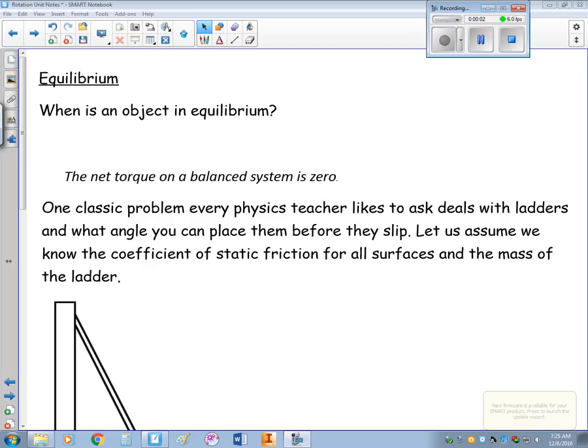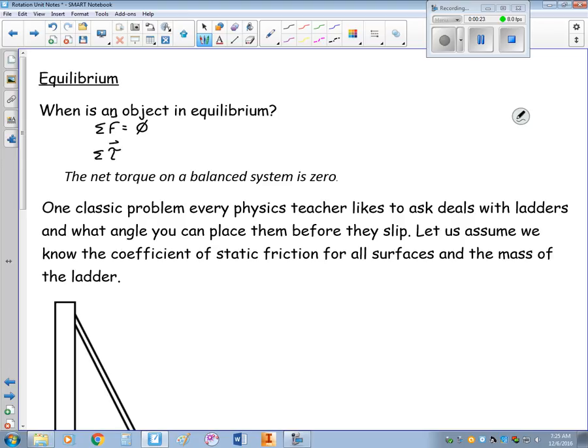Alright, this is video four for the rotation unit, and in this one we're going to talk about equilibrium. So in the past, an object was in equilibrium when the net force acting on the object was zero. Well, now we have to include torque. The net torque acting on the object must be zero as well. So we have equilibrium when these two conditions are met.